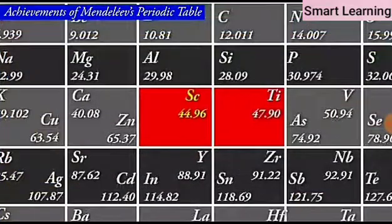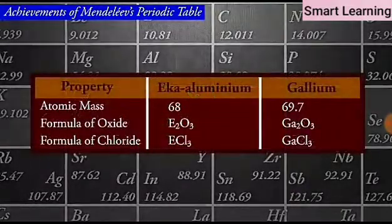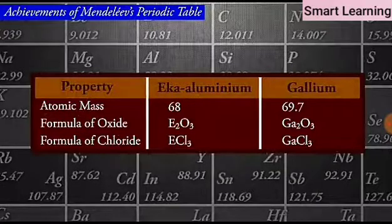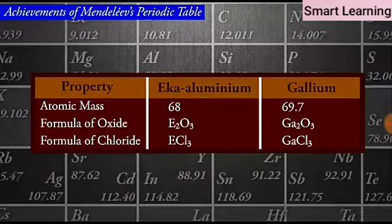For instance, scandium, gallium and germanium discovered later have properties similar to Eka-boron, Eka-aluminium and Eka-silicon respectively. The properties of Eka-aluminium predicted by Mendeleev and those of the element gallium which was discovered later and replaced Eka-aluminium are listed as follows. This provided convincing evidence for both the correctness and usefulness of Mendeleev's periodic table.